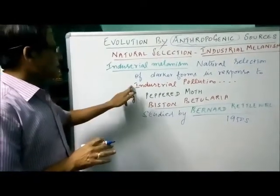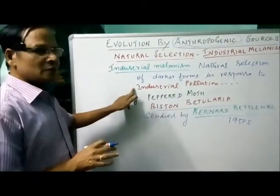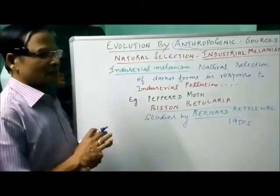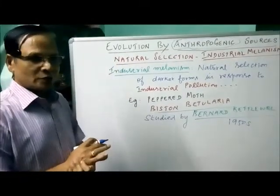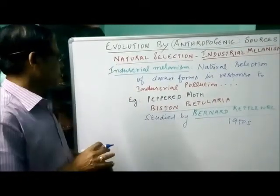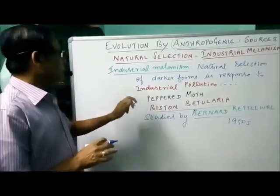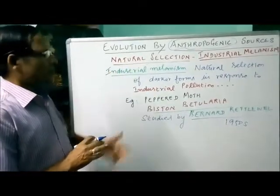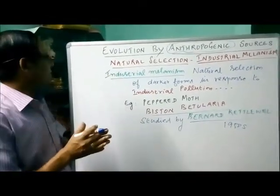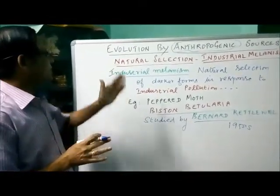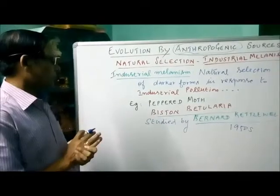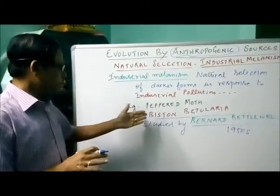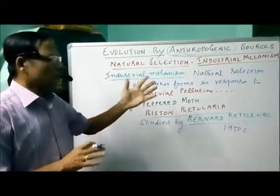Industrial melanism is the classical example for natural selection. That is an important point. The name of the moth is Biston betularia.